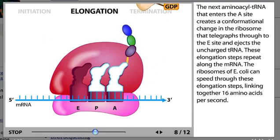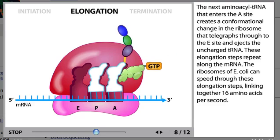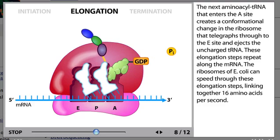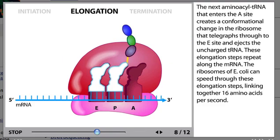These elongation steps repeat along the mRNA. The ribosomes of E. coli can speed through these elongation steps, linking together 16 amino acids per second.